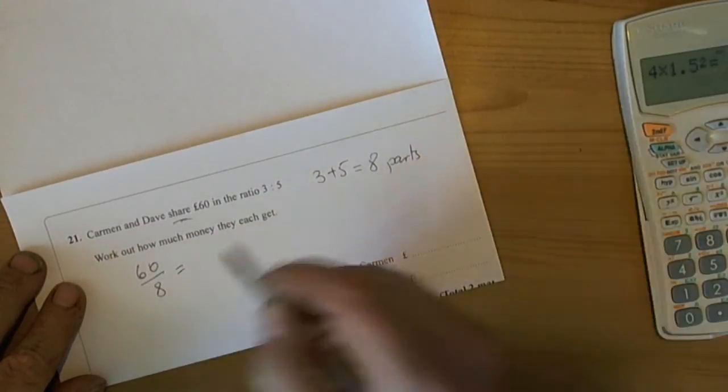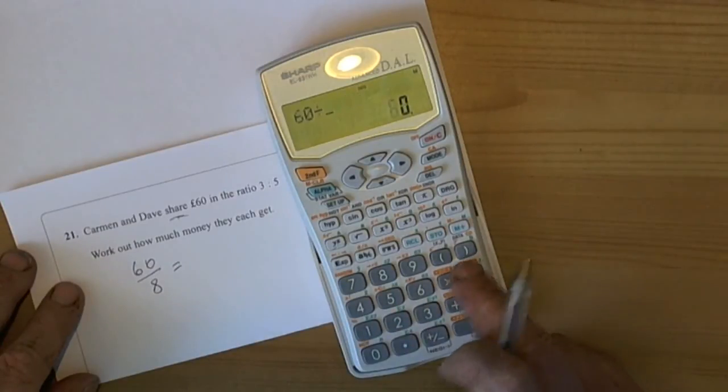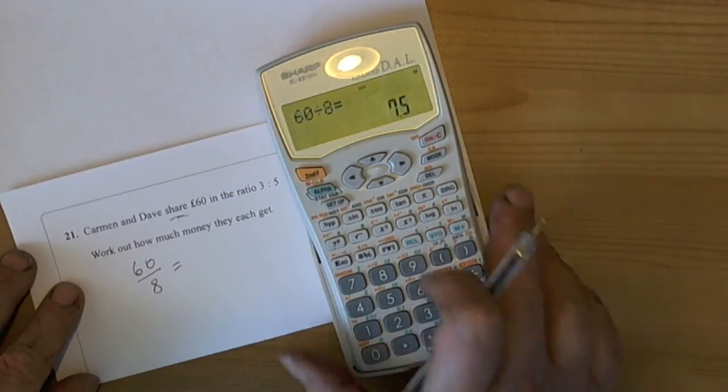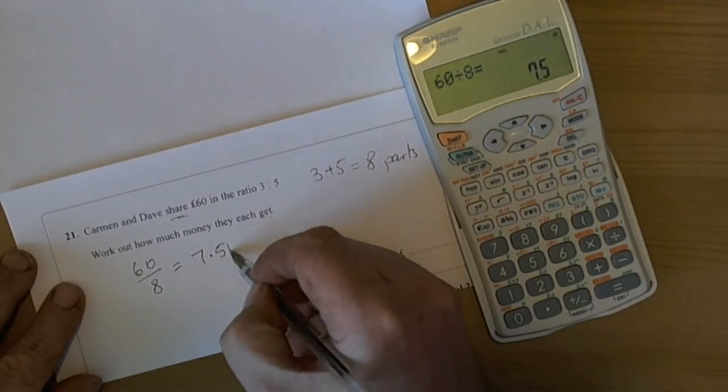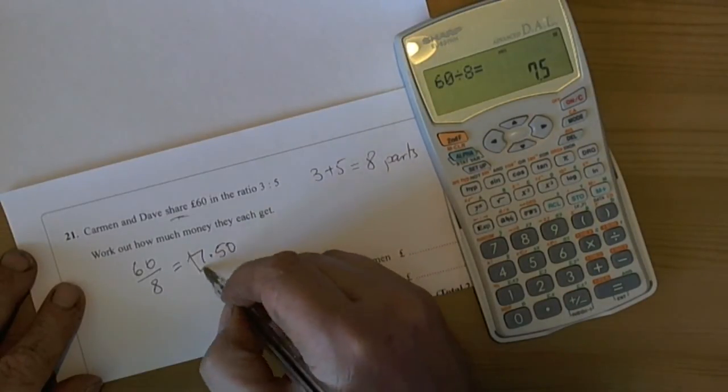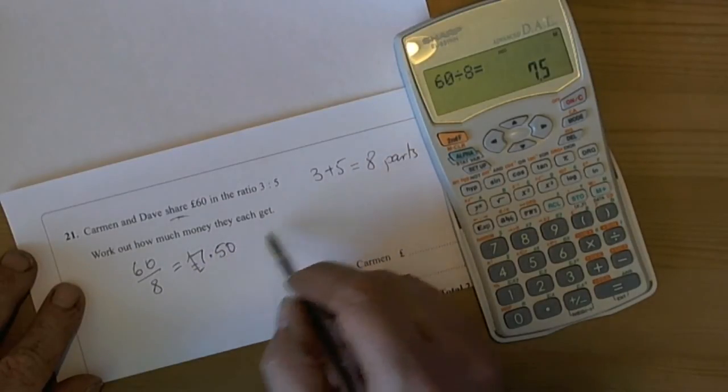So 60 divided by 8. So on our calculators, 60 divided by 8 equals 7 pounds. And be really careful on calculators, that means 7.5 is 7 pounds 50. So that's what one part or one share is worth.